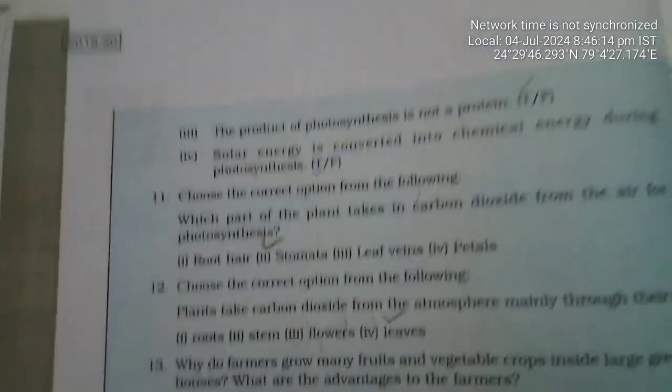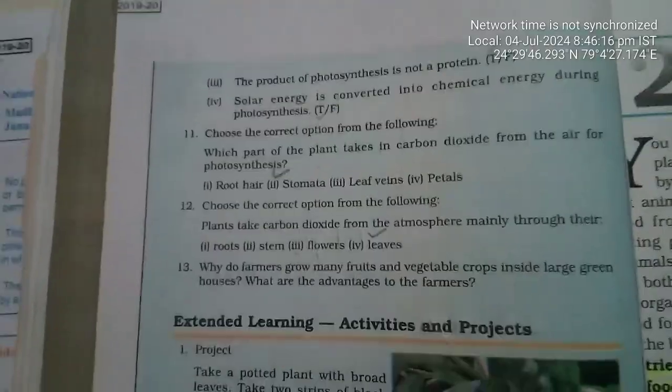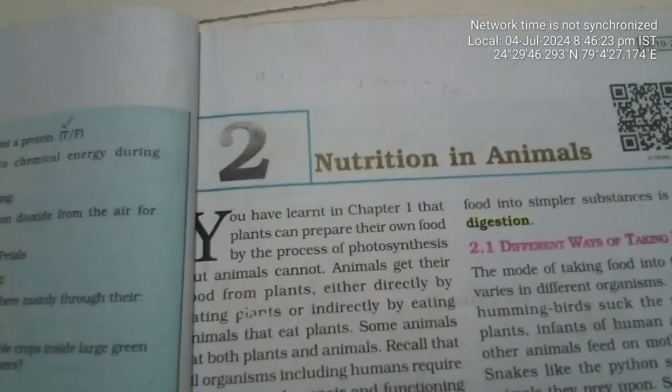Tick the Correct: Stomata and Leaves. That completes Chapter 1. Now moving to Chapter 2: Nutrition in Animals.